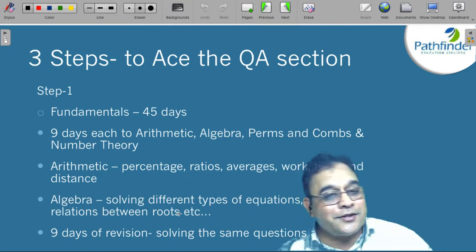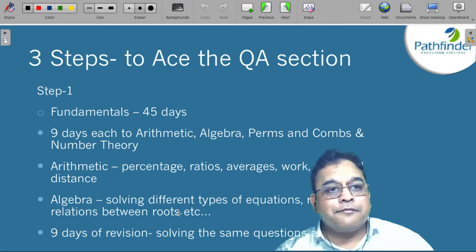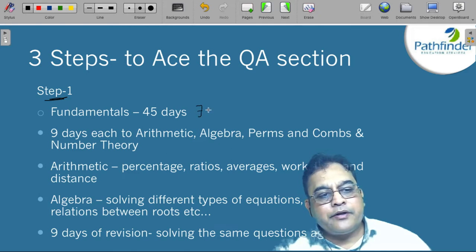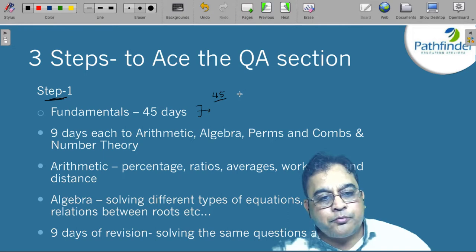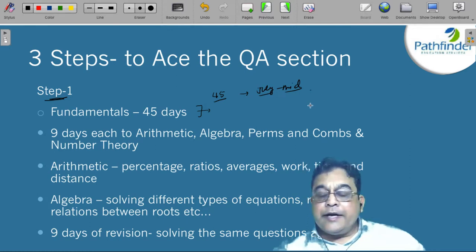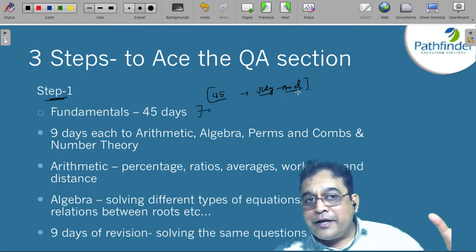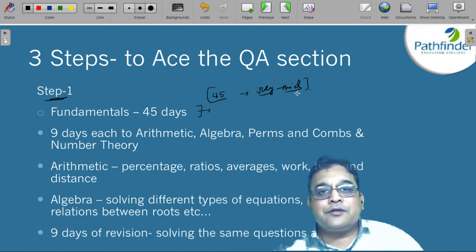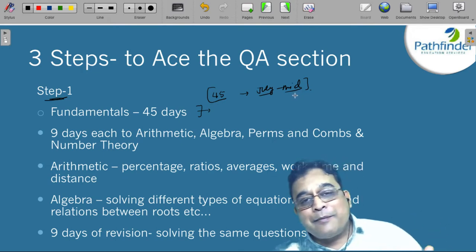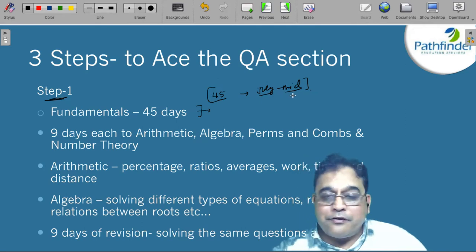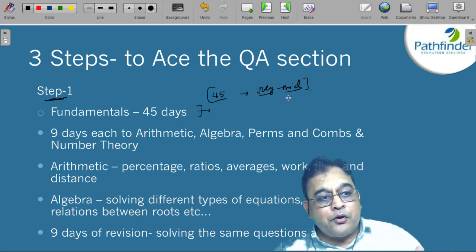Now let us start with the implementation process. Here are 3 steps to ace the quantitative aptitude section of CAT. Step 1, very simple. We call it fundamentals. Give it 45 days. So if you start in June, you should be through by July mid. Why? Because everything has to be completed in time limits. You have CAT which is going to be held in November and before that you have to take a certain number of steps and that is why these timelines are necessary, they are sacrosanct. Try to adhere as far as possible.